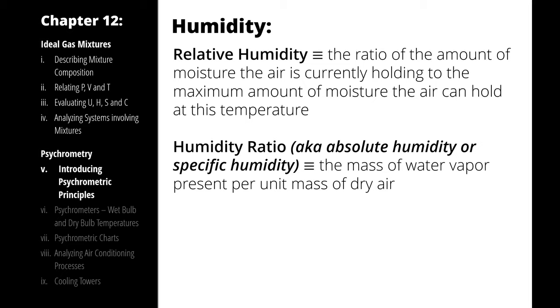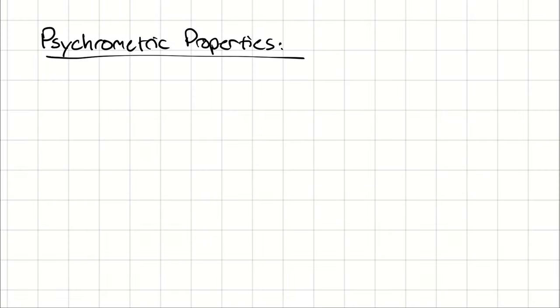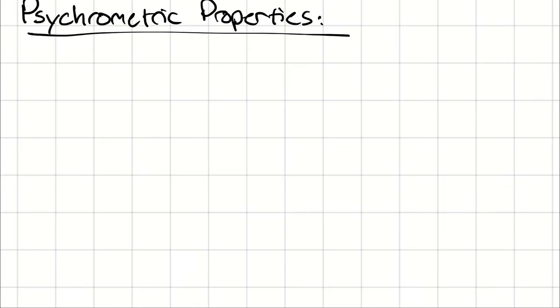Let's try describing these properties with a little bit more math. The analysis of water vapor in dry air is called psychrometry, so these are psychrometric properties.